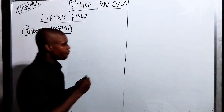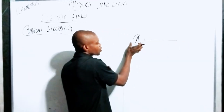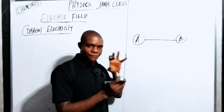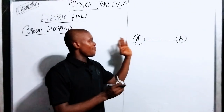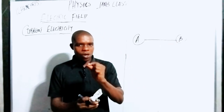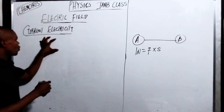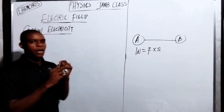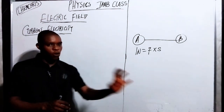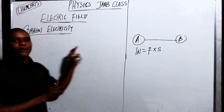Now remember, for an object to move from position A to position B, there is a distance, and we say that work is done — work equals force times distance. We're talking about electric currents, which means charge at motion. So for a charge to move from point A to point B, there must be a force or pressure applied.